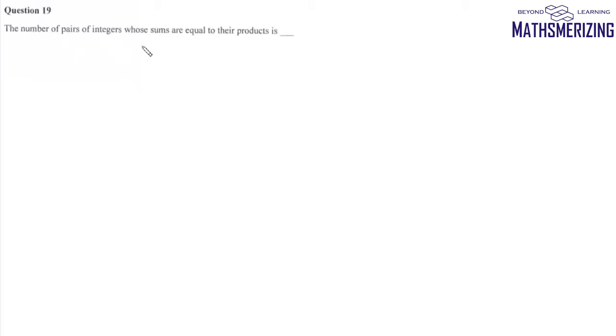Now question number 19 says: the number of pairs of integers whose sum are equal to their product. That means we need to find two numbers such that x plus y is equal to xy.